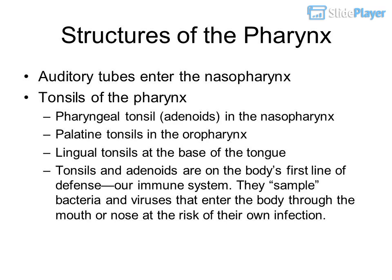Structures of the pharynx include auditory tubes that enter the nasopharynx, and the tonsils: the pharyngeal tonsil or adenoids in the nasopharynx, palatine tonsils in the oropharynx, and lingual tonsils at the base of the tongue. Tonsils and adenoids are on the body's first line of defense — our immune system. They sample bacteria and viruses that enter through the mouth or nose, at the risk of their own infection.